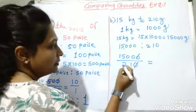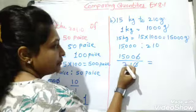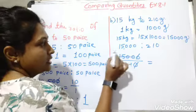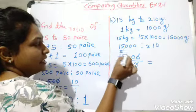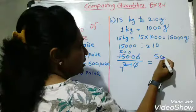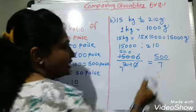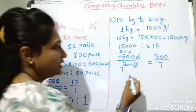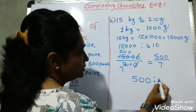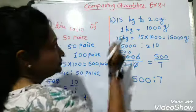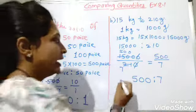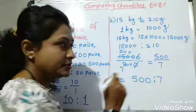Dividing by three: three sevens are 21, and three fives are 15, with the zero as it is. So we get 500 upon 7, and writing this as a ratio: five hundred is to seven. So for 15 kg to 210 gram, the ratio is 500 is to 7.